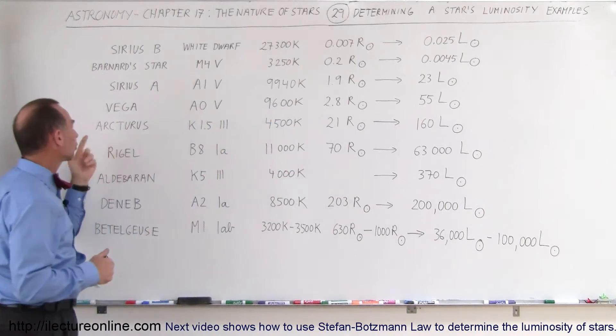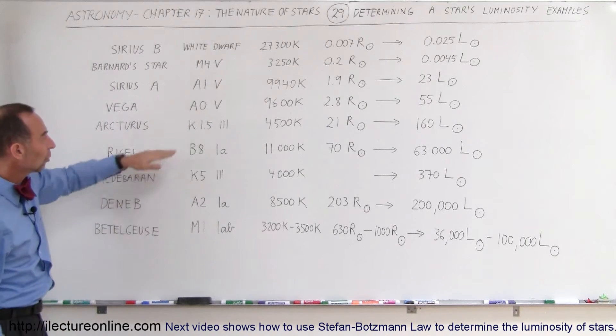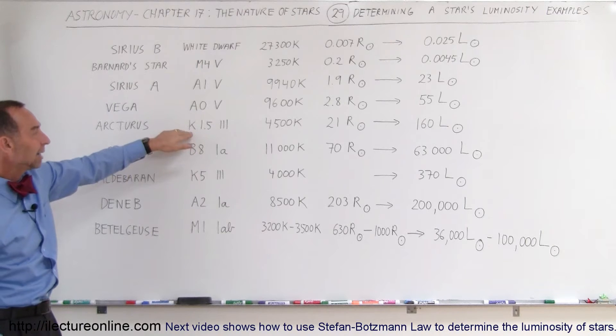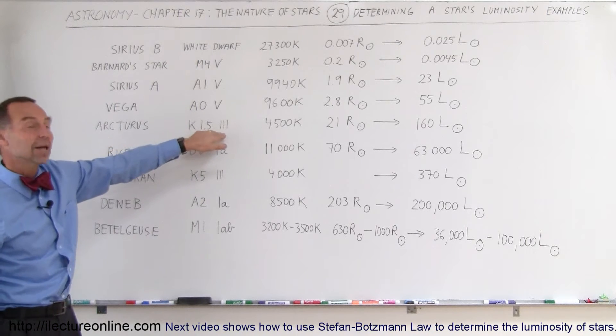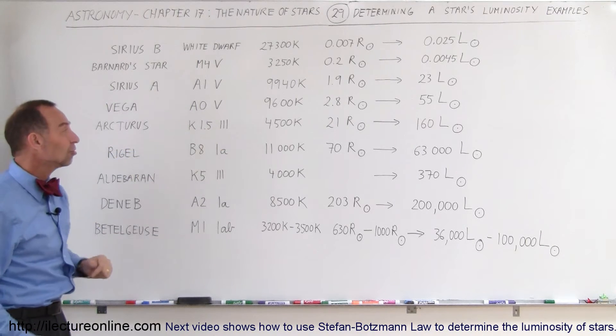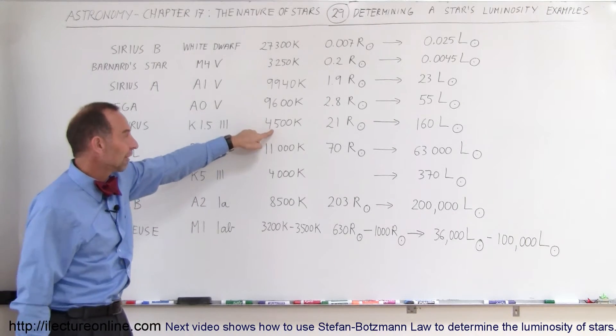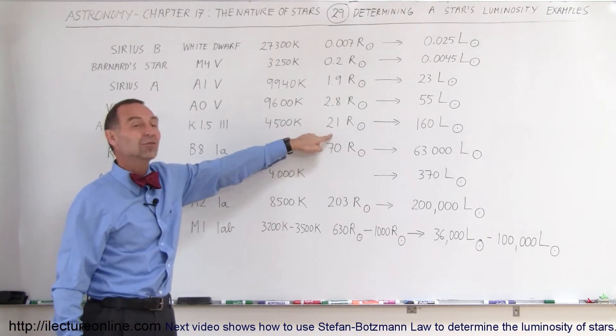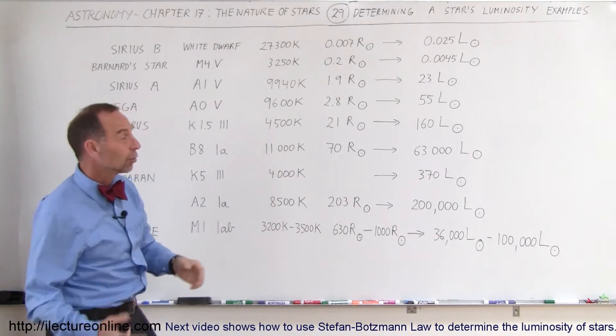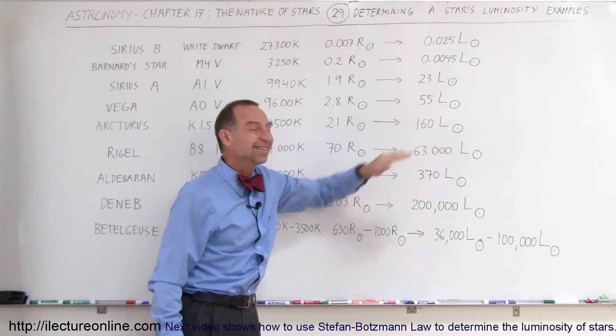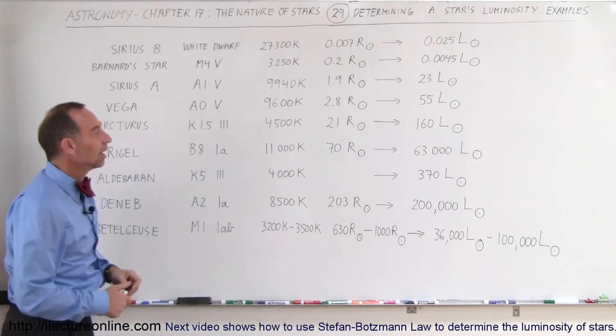Now we have Arcturus, which is the largest star in the constellation Taurus. It's a K1.53 star, meaning it's a K-class star, but it's not a main sequence star, it's a red giant, so therefore they're much bigger in size, surface temperature a little bit lower, 4,500 Kelvin. 20 times, 21 times the radius of the Sun, correspondingly, the luminosity is 160 times the luminosity of the Sun.